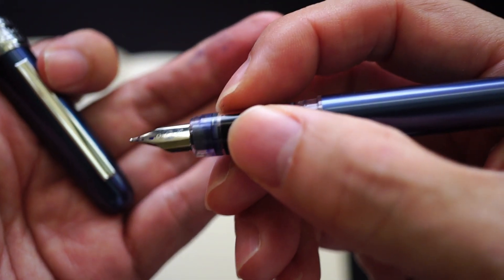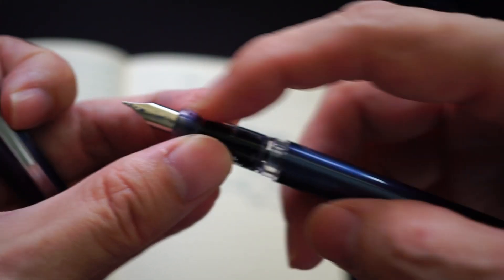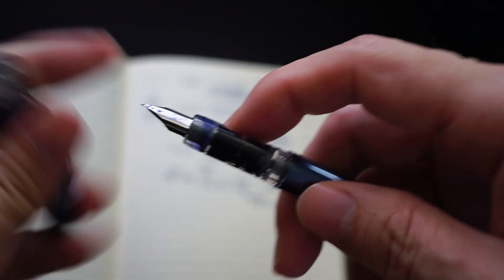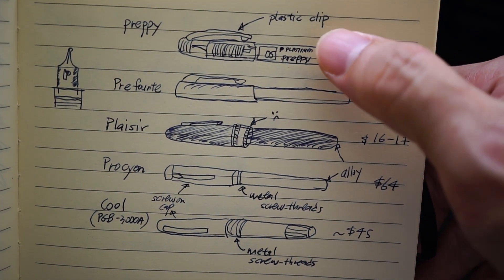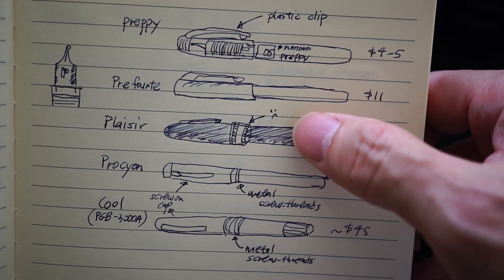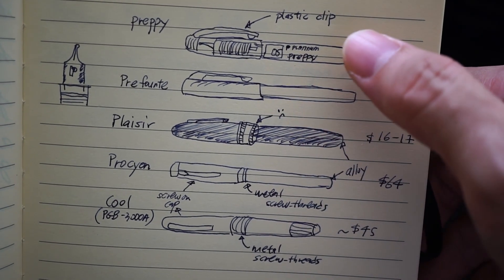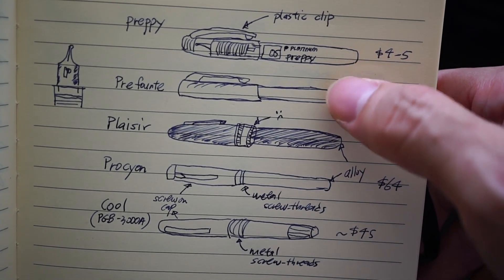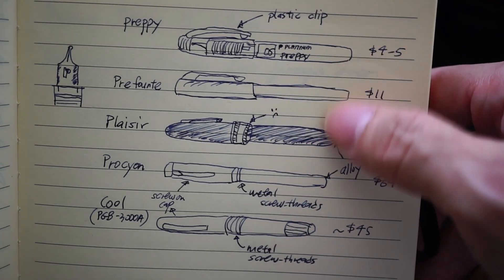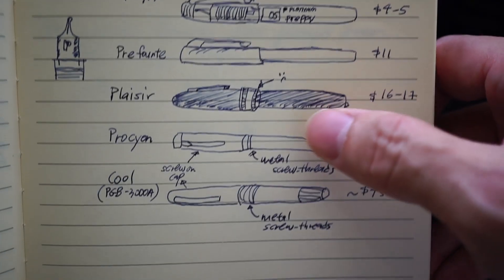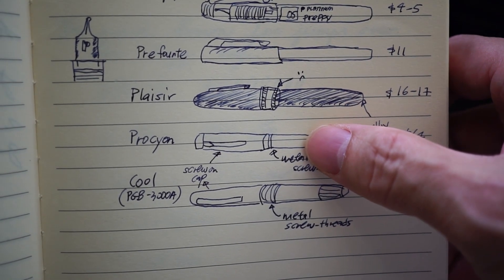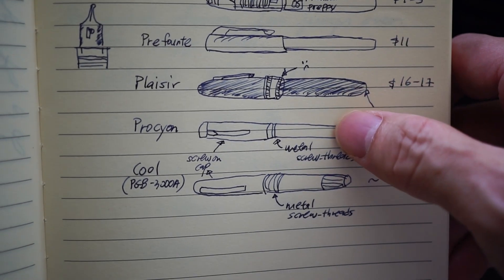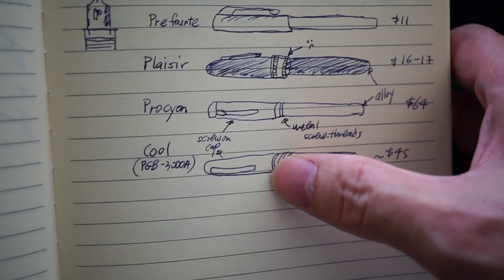Broadness in terms of girth is also important. From what I gather, the Preppy, the Prefonte, and the Placer all have a similar style of grip section area which I actually like. I like the long, more girth section. The Procyon has a smaller, more tapered section, I'm sorry I don't have a Procyon with me.